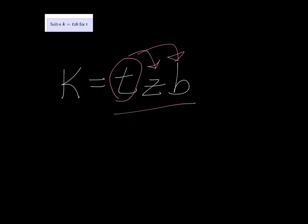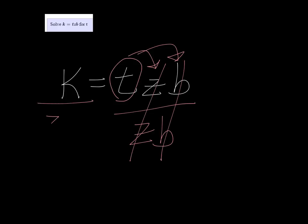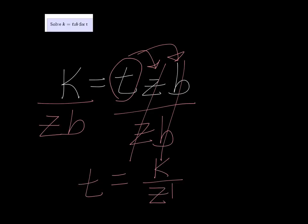So to undo multiplication, I divide by z and b. That divides them out, and on the other side I have to divide by z and b as well. So t is just equal to k over z b.